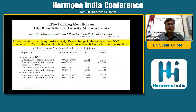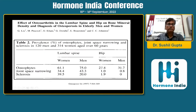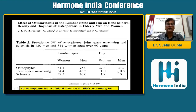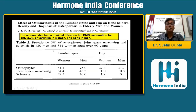Hip osteoarthritis is also a consideration. In people aged 60 years, osteoarthritis is present in the lumbar spine in 61% of women and 75% of men, while joint space narrowing and sclerosis is present in 20 to 45%. For the hip, osteoarthritis is present in about 27% of women and 31% of men. However, hip osteoarthritis has a minimal effect on hip BMD, accounting for only about 2.2% of variation in women but not significantly in men.